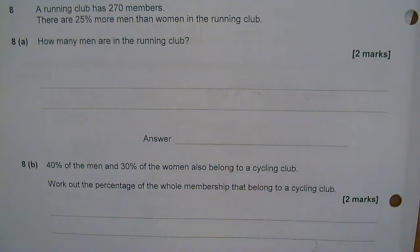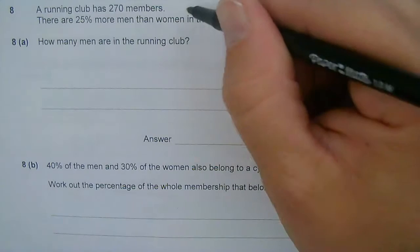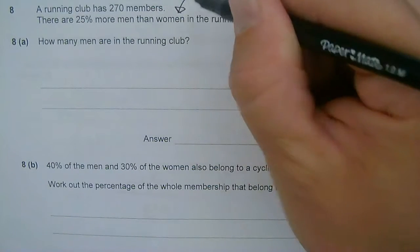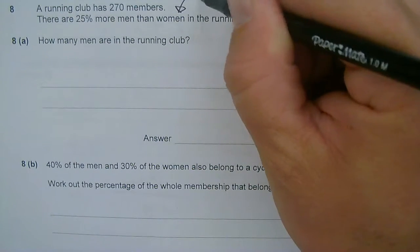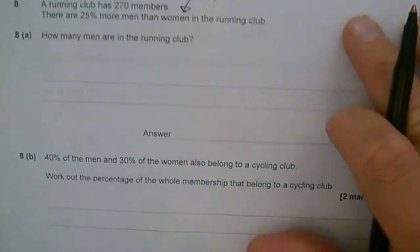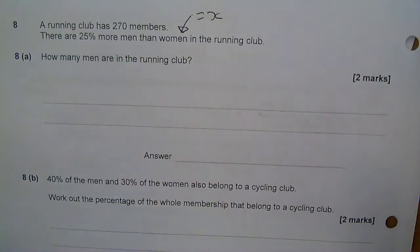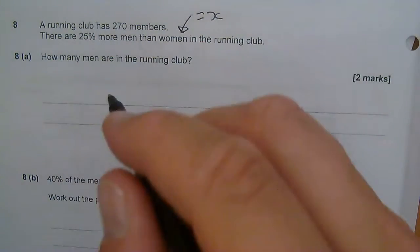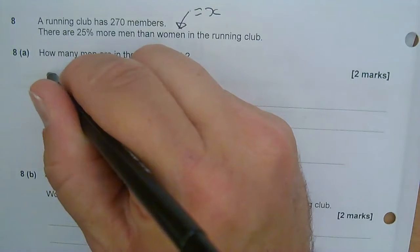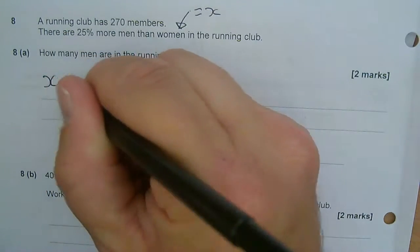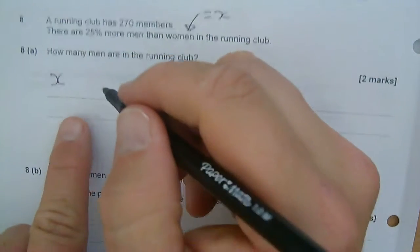So if I imagine that the number of women in the running club is, I'm just going to put that equal to x. As I say, there isn't one method for working this out, but I'm going to put the number of women as x. So to model this situation, I've got x - that's my number of women in the running club.